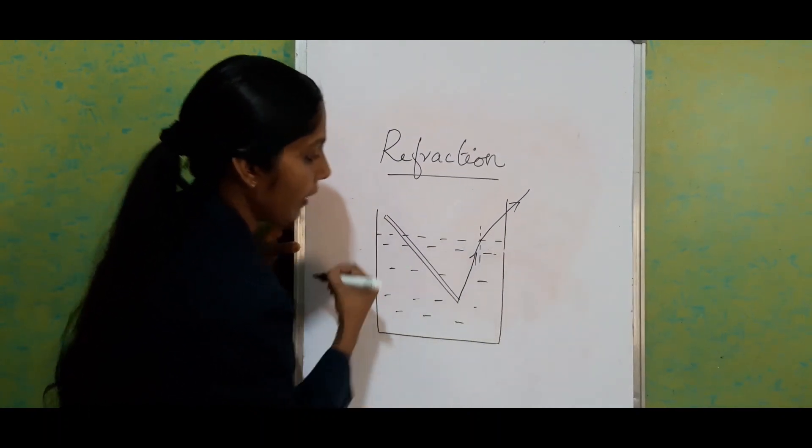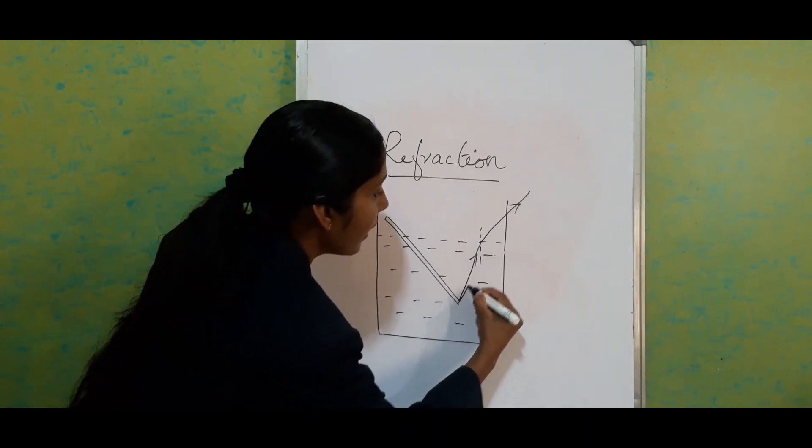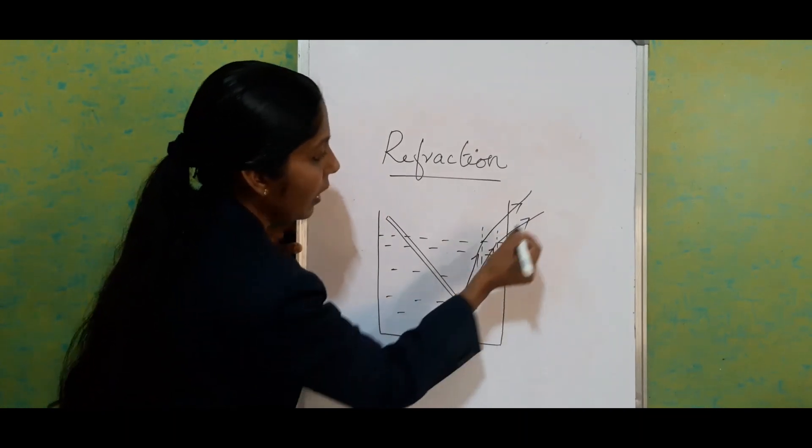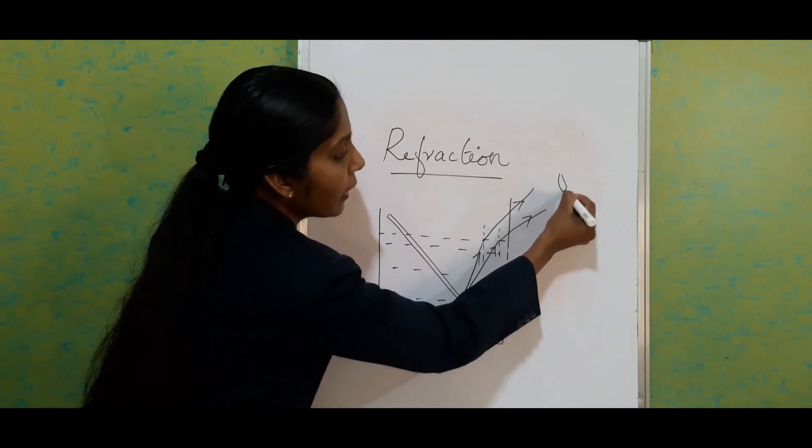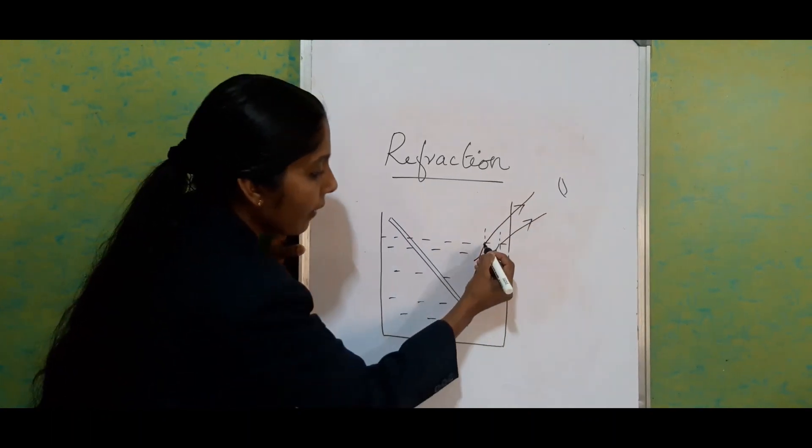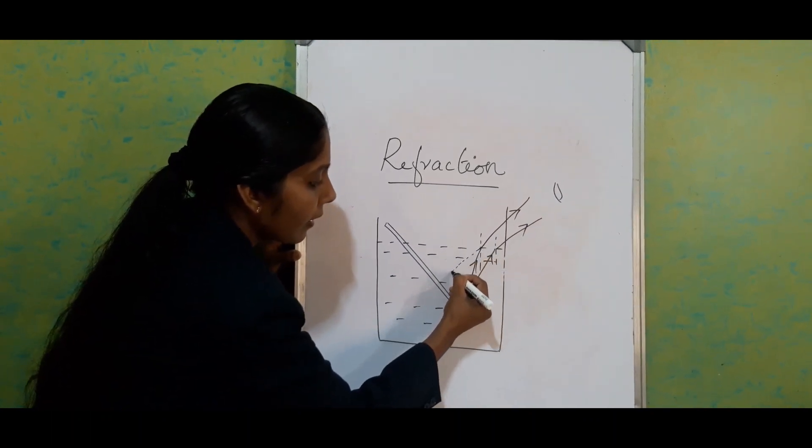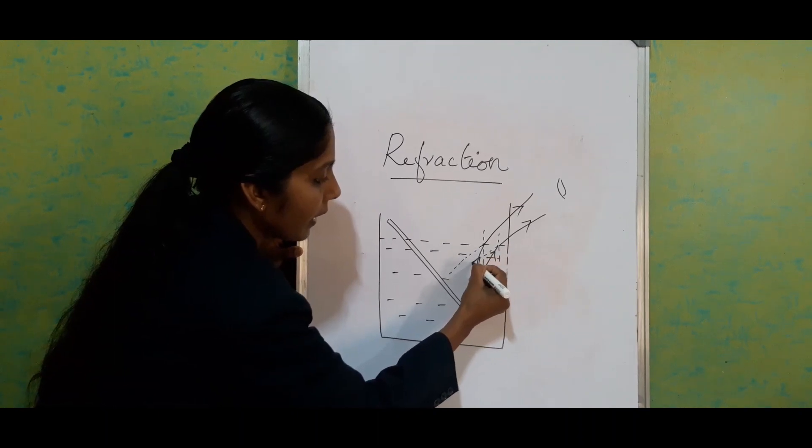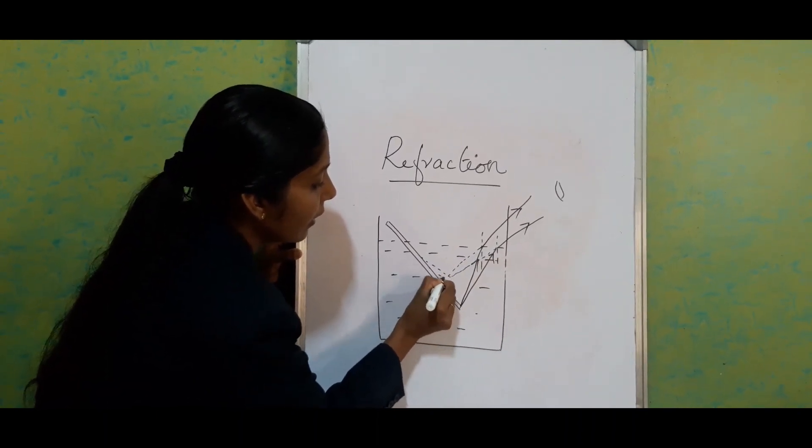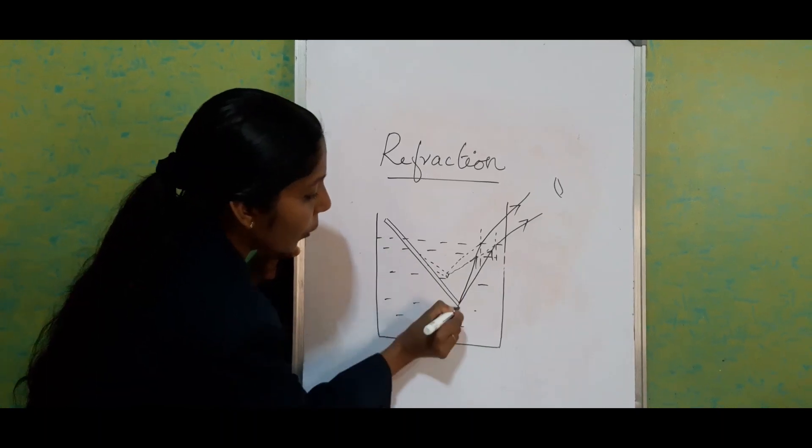If this is the normal, it bends away from the normal. From here we are watching. When we are watching through this ray, we feel the tip is here. When we extend the line, we will get the tip. So actually we feel like it was going this way.